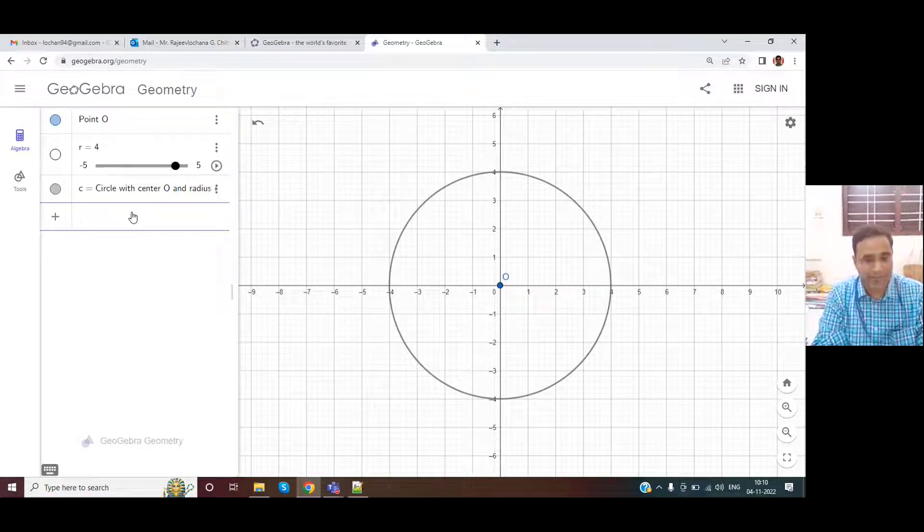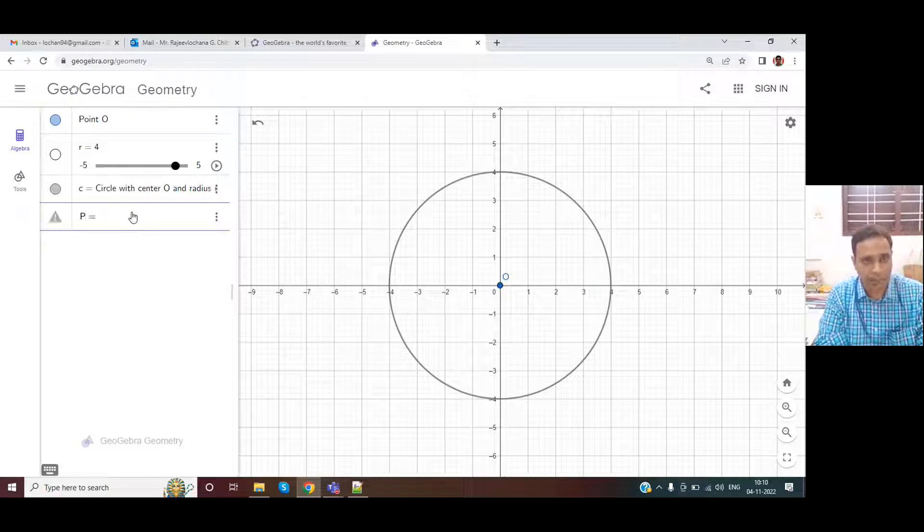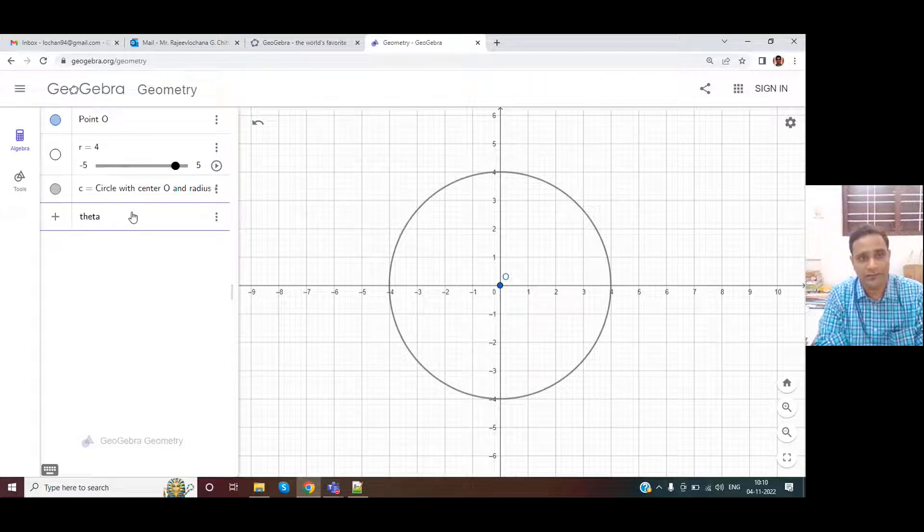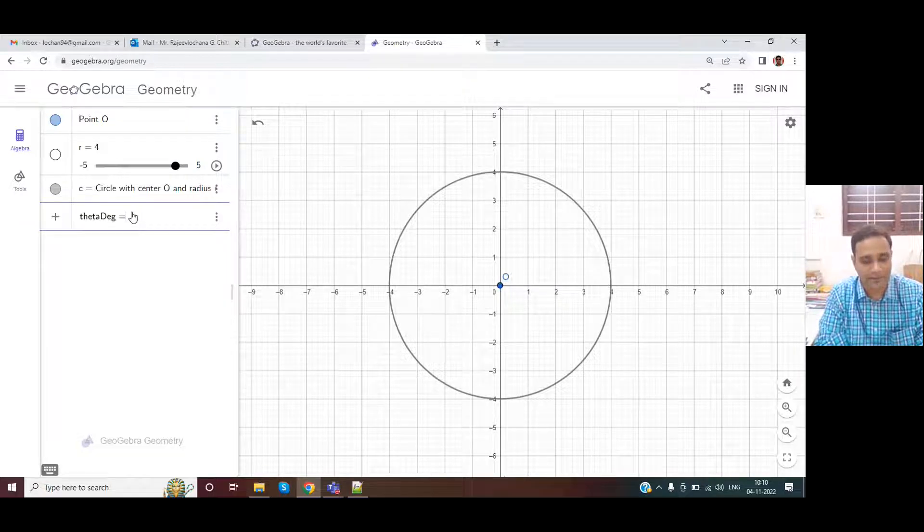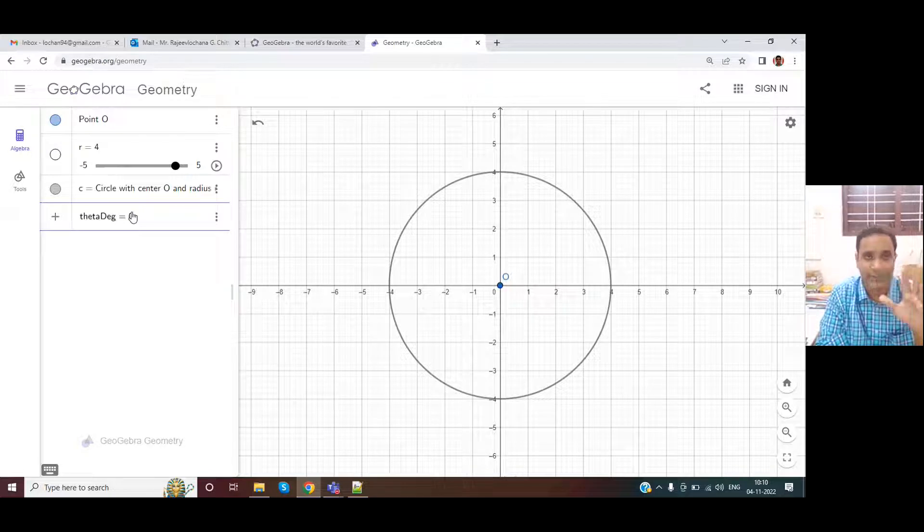So let us give P as a point. Rather than that, let me use theta degree. Let me give it as 0. So I want to define a variable called theta degree.